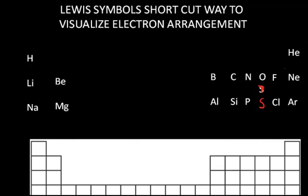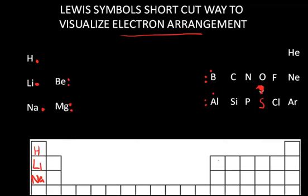The Lewis symbol is the shorthand way to visualize the electron arrangement of the valence shell. Hydrogen is in group 1 on the periodic table, so it has one valence electron. Lithium is just below it and also has one valence electron. Sodium, just below lithium, is also in group 1. Beryllium and magnesium are in group 2 and have two valence electrons. Boron and aluminum both have three valence electrons. You can start to understand why the chemistry within groups or families is similar, because chemistry is all about the valence electrons, and their number dictates the type of chemistry we can predict.